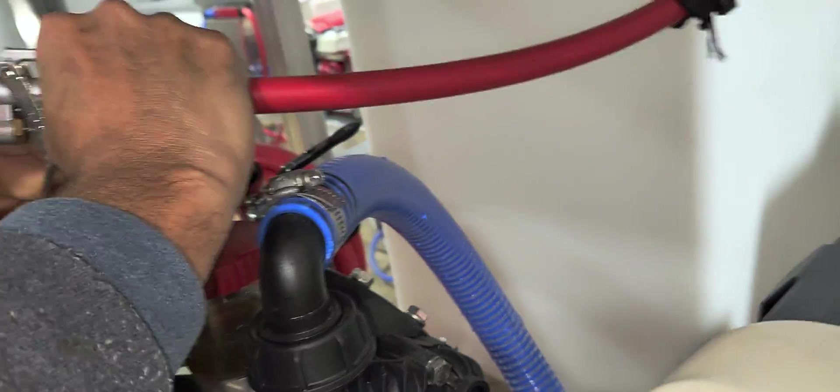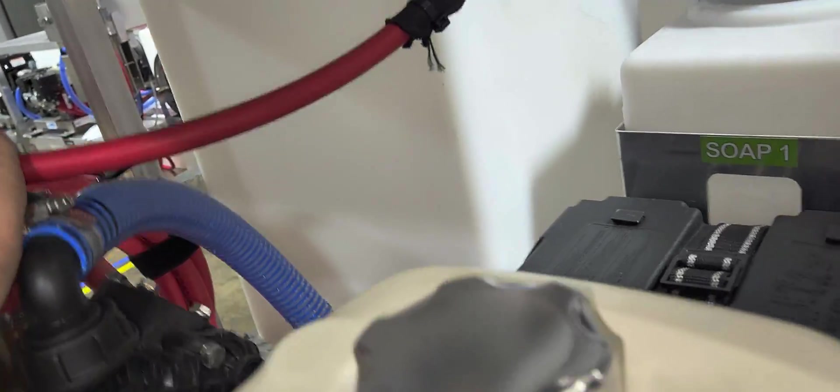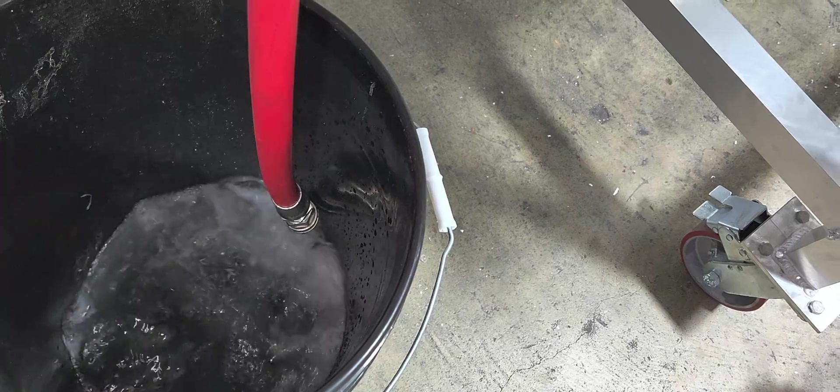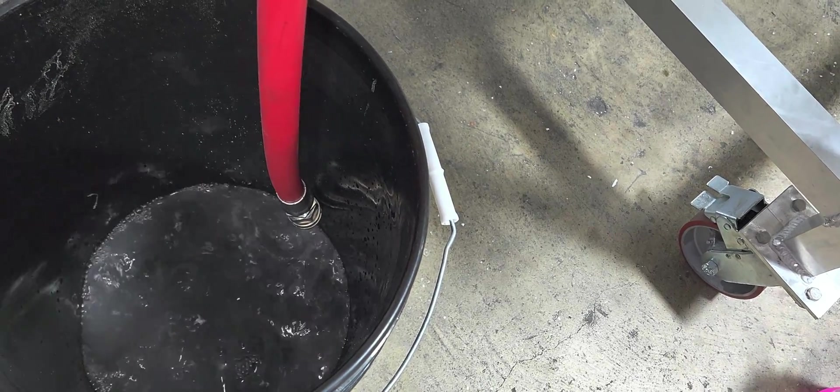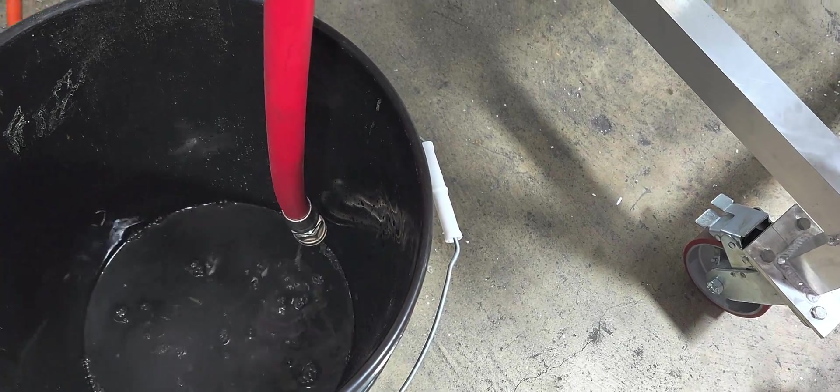So put your air chuck in there. And you just want to push all the air out right there. Once you've got all the water out, you can leave that disconnected.